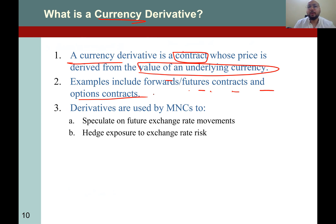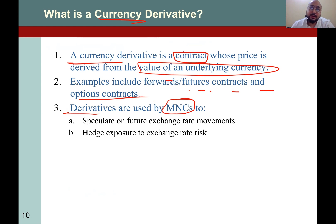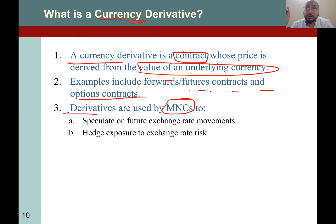Let's talk about how derivatives are used by MNCs — multinational corporations doing business in more than one country. MNCs face huge risk because they are buying raw materials and making sales in millions of dollars across the globe. Even if payments are delayed by 30 days, it can disturb their ability to pay salaries, bills, and other commitments — this is called a liquidity problem or crunch.